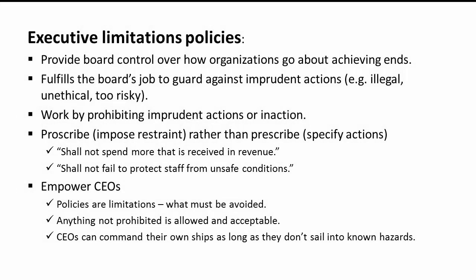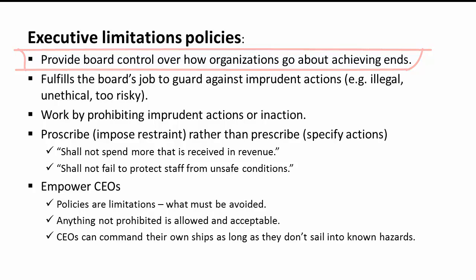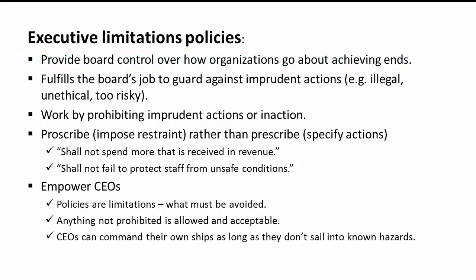We've just talked about boards determining the ends or expected results for the organization. Now we're going to turn to how boards exercise their oversight on how the organization actually achieves those ends. This can be a challenging part of governing because boards need to walk a middle path between letting the CEO do whatever they want and essentially being a rubber stamp board, and trying to do the work of the CEO and make the day-to-day management decisions.